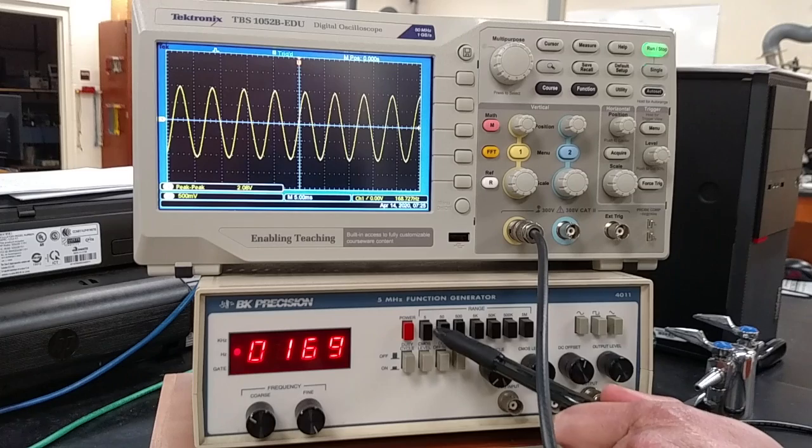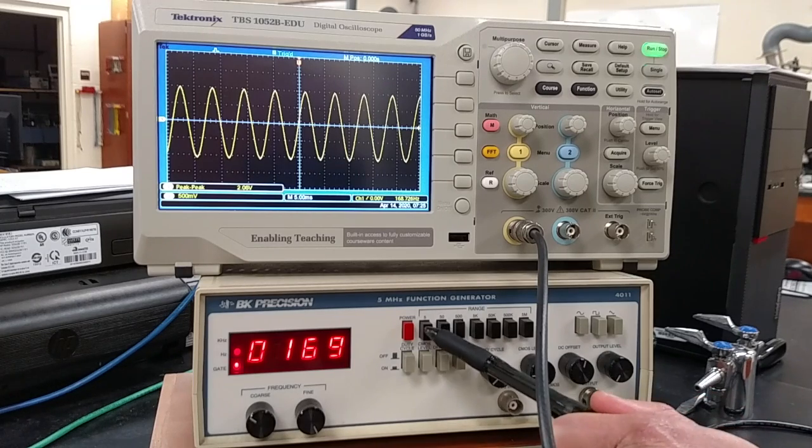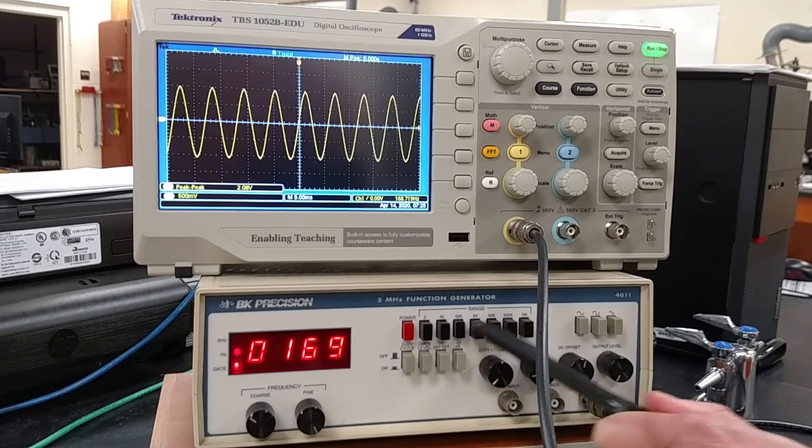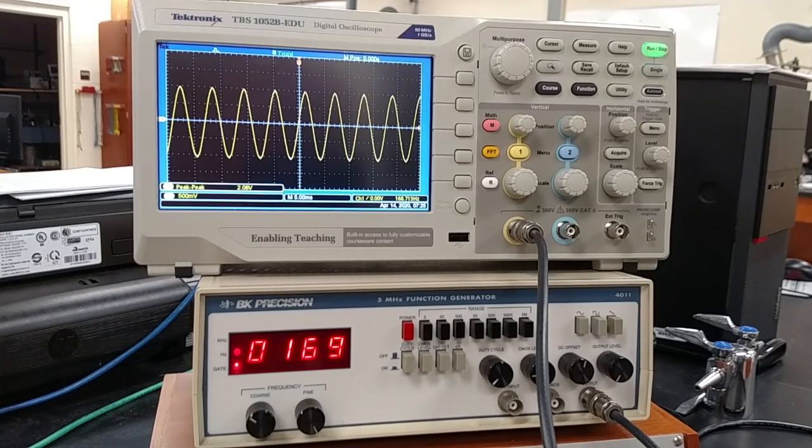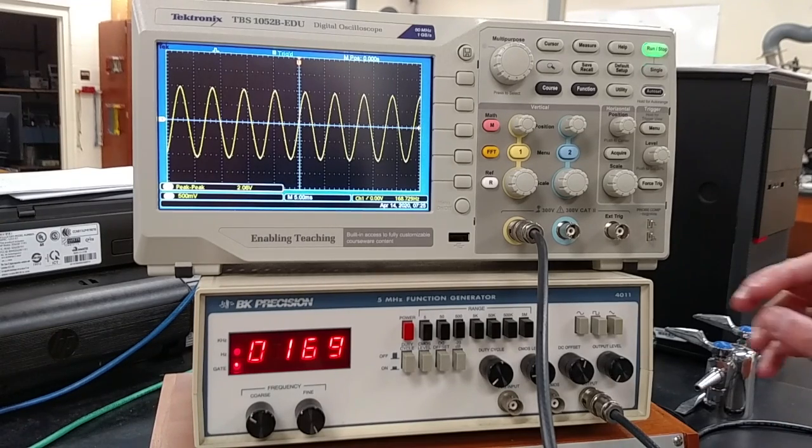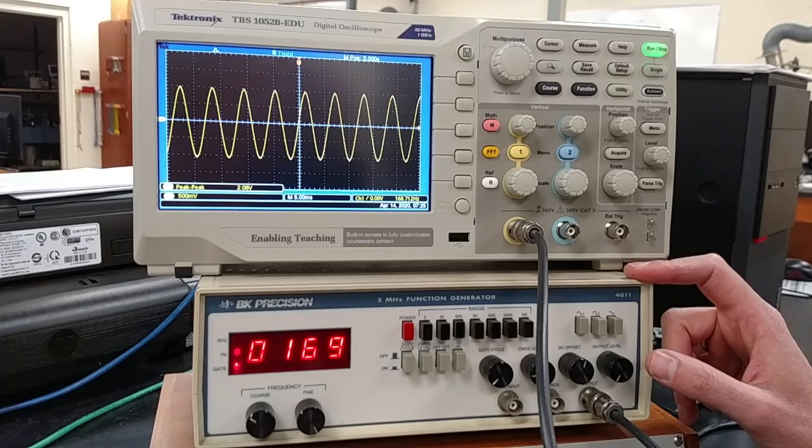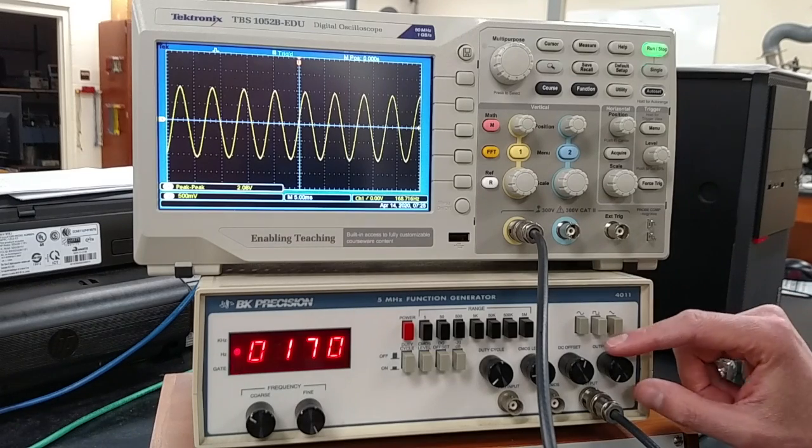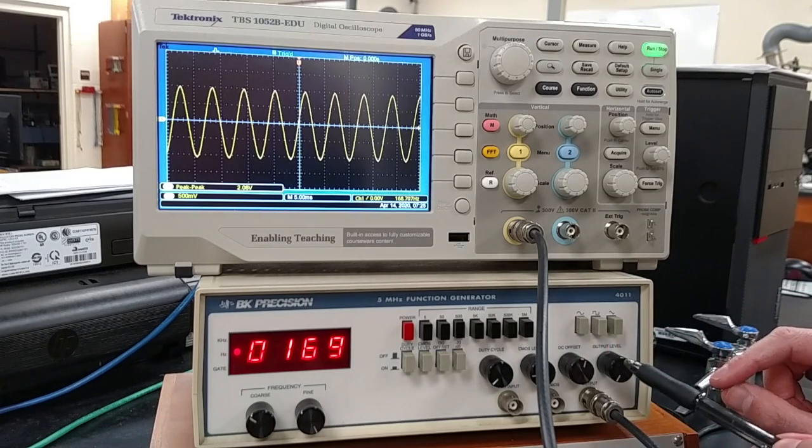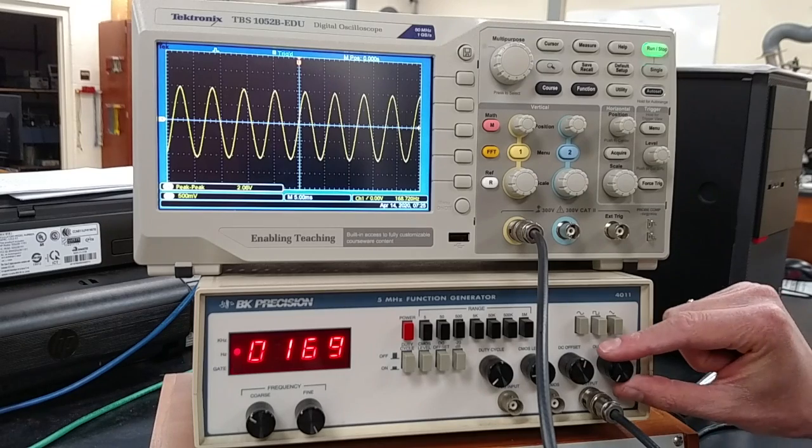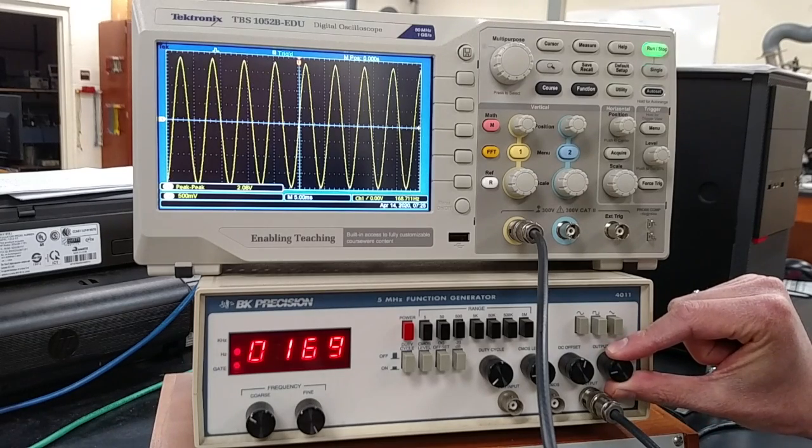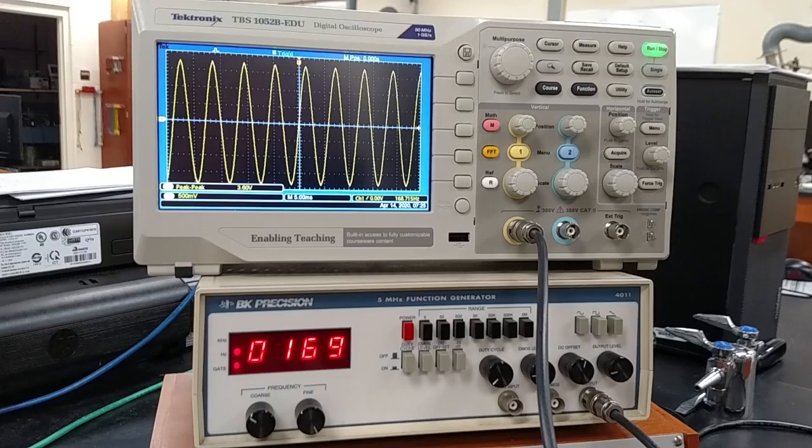Here we can select, there are two knobs to select frequency and then a few buttons where we can change the range from five hertz up to five megahertz, running the full range of signal output.